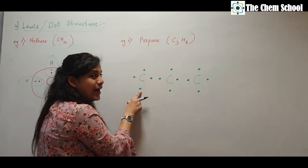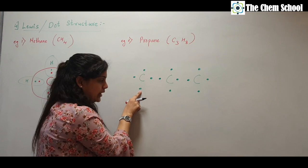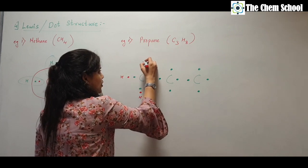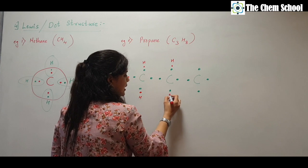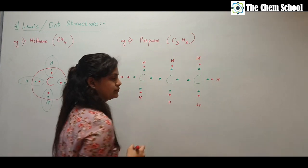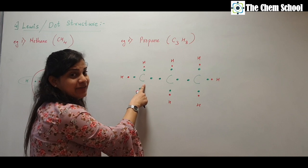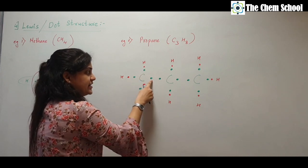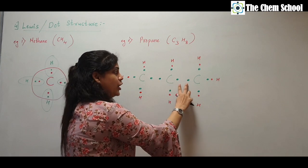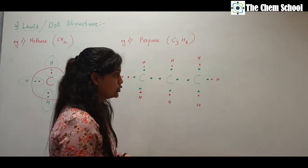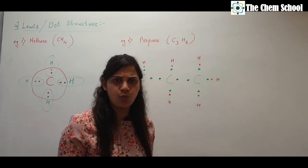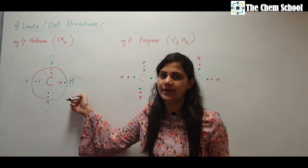Wherever you see a free electron, add a hydrogen there. Keep adding hydrogens wherever there is a free electron. Check: each carbon now has eight electrons in its vicinity — one, two, three, four, five, six, seven, eight — the octet is complete for every carbon. Every hydrogen has two electrons and has completed its duplet. You can draw circles around atoms if you wish or skip them.